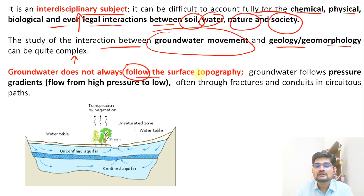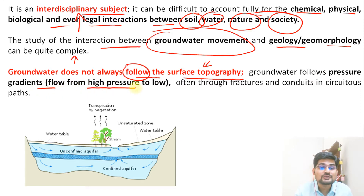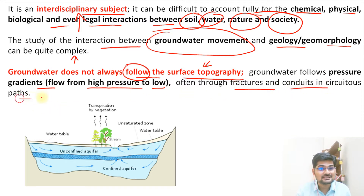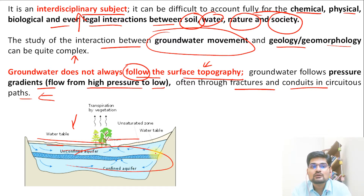Groundwater does not always follow the surface topography. The structure of the underground is important — geological structure and rock types matter. Groundwater follows pressure gradients, flowing from high pressure to low pressure, often through fractures, conduits and circuitous paths. So fractures, joints, faults and interlayers of rock structures become important. If you look at this image, one is surface water and the other is the water table where the aquifer is important.